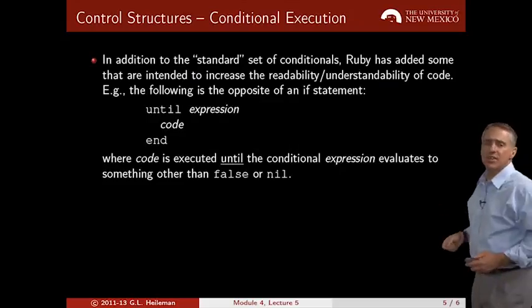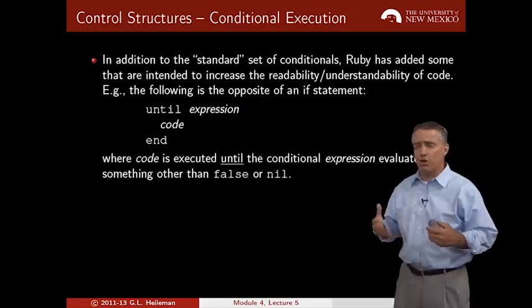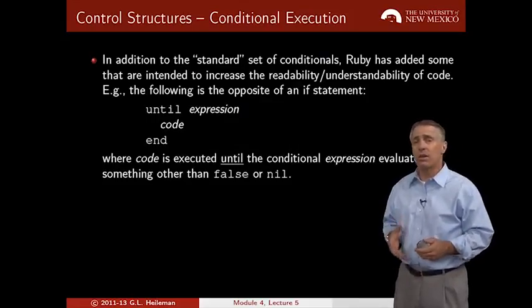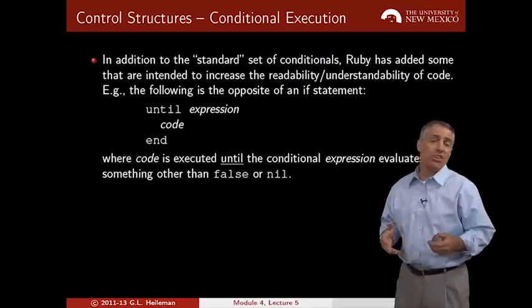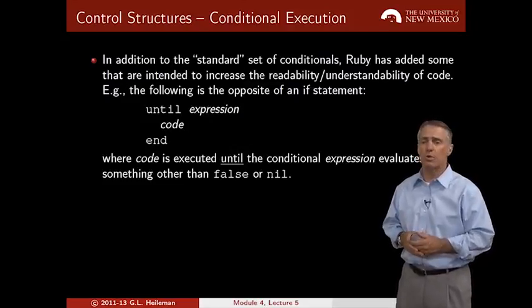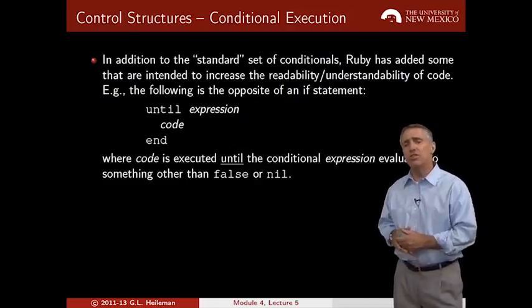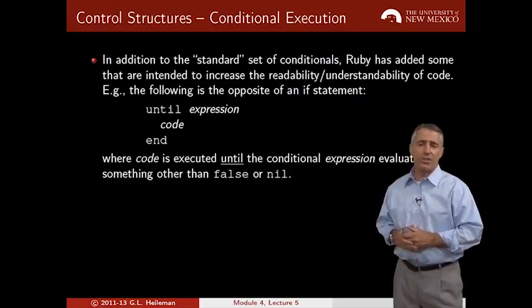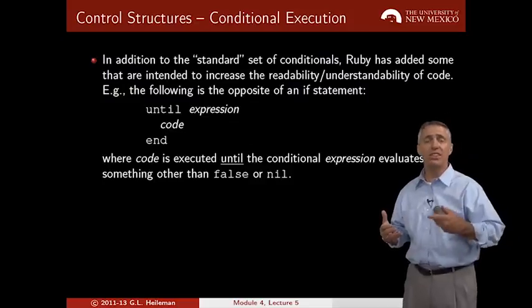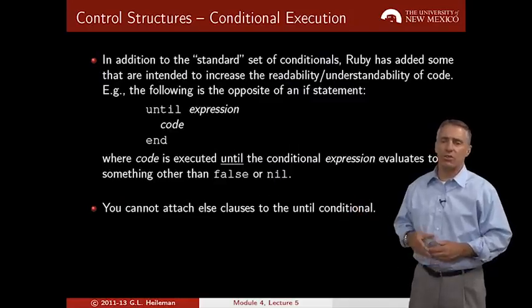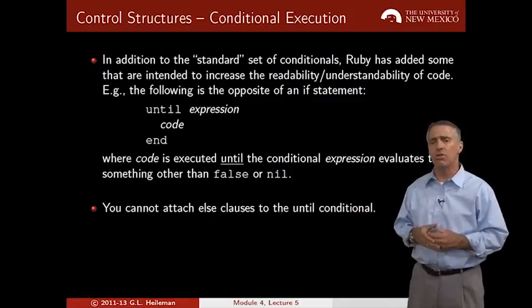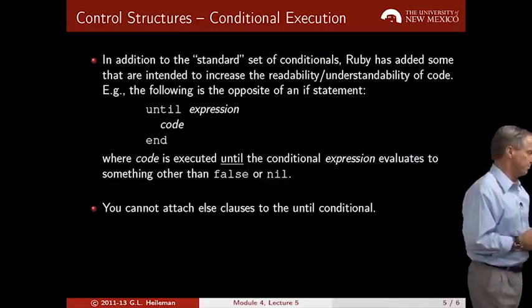Now, in addition to this standard set of conditionals in Ruby, there are some others that have been added to increase the readability of the language. And again, recall that the philosophy of Ruby is to make programming fun, to make it easy for you to express things. And so this is a bit of what's called syntactic sugar. You don't need this, but sometimes it makes your code a little bit more readable. So rather than using an if statement, you can use an until statement. And the syntax here is until this expression tests true, you're going to continue to execute this code. That's what that means. So in other words, it'll continue to execute until something other than false or nil is returned by that expression I show there. You cannot attach any else clauses to this. So you'll see this until statement or until conditional, I should say, used quite extensively in Ruby code.